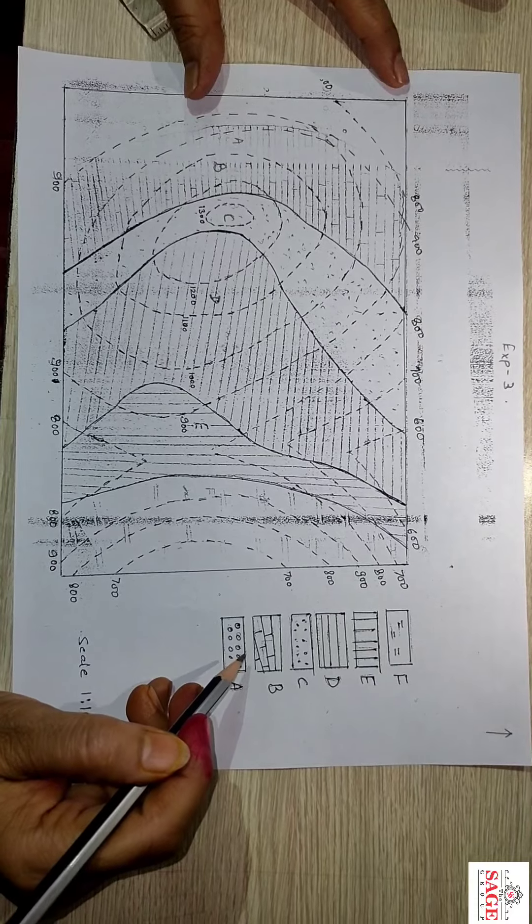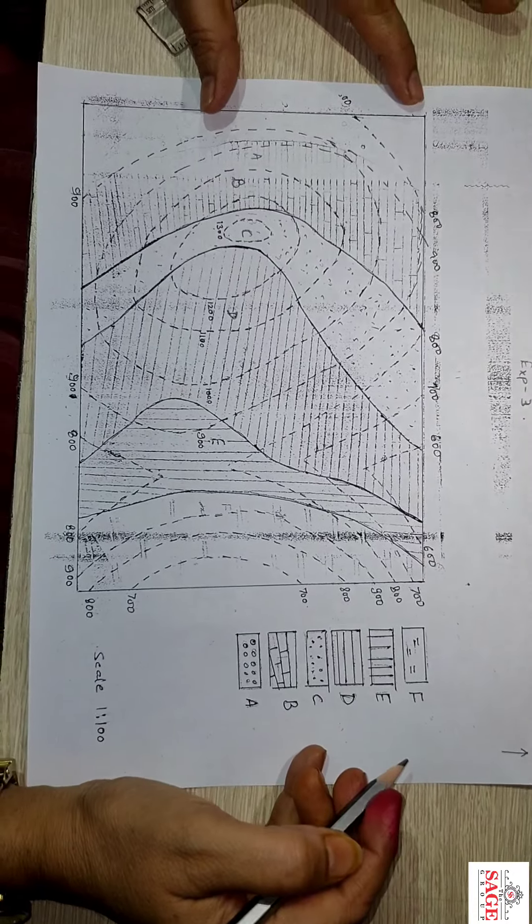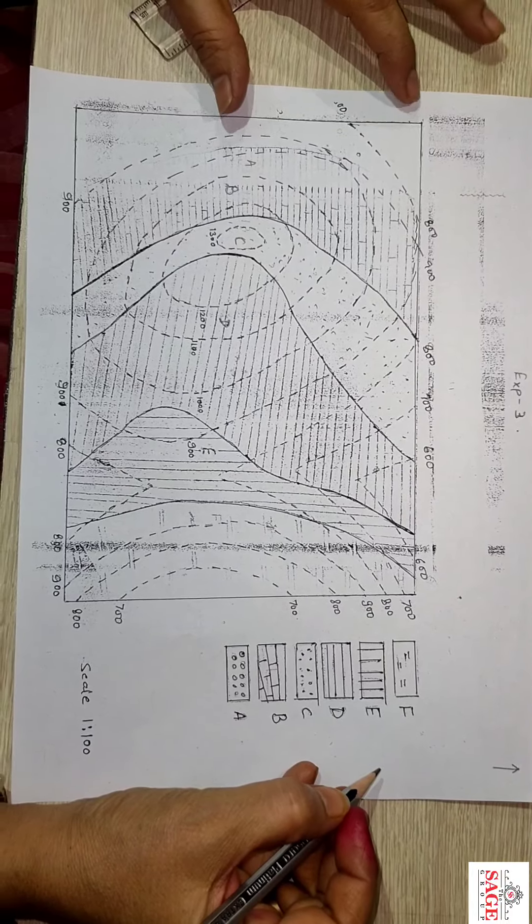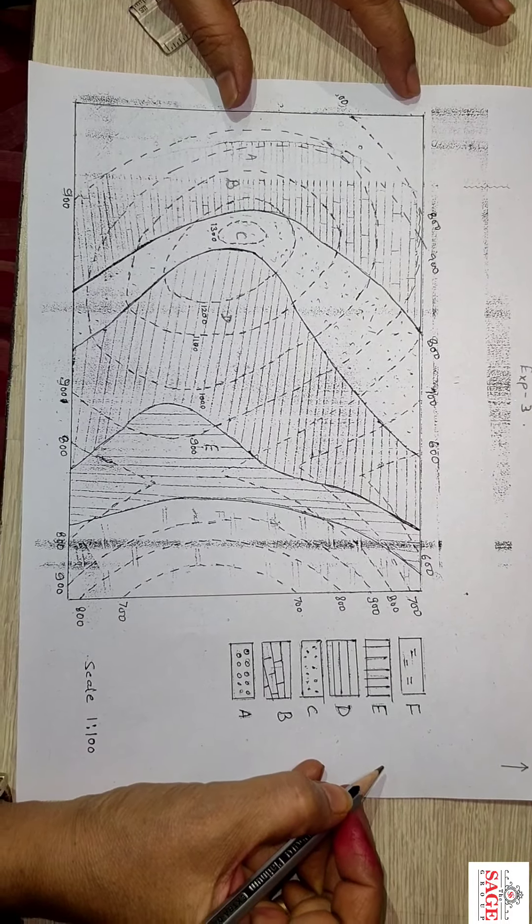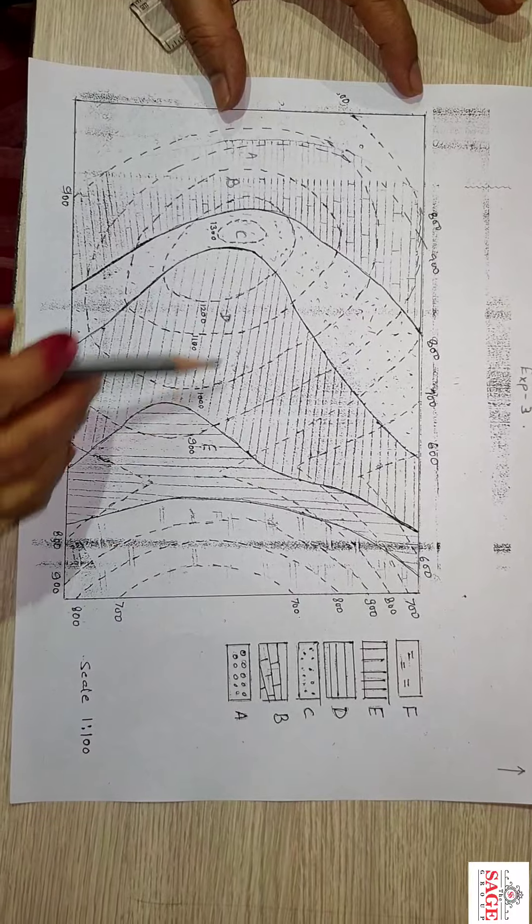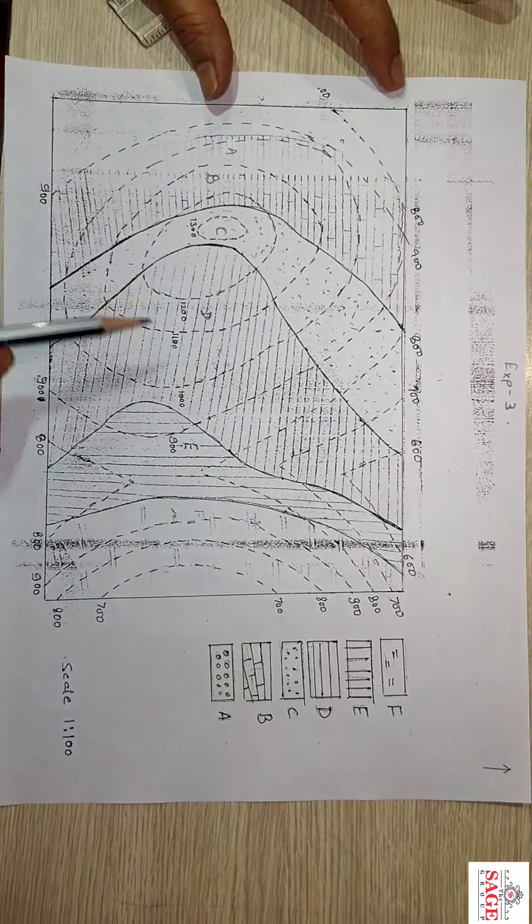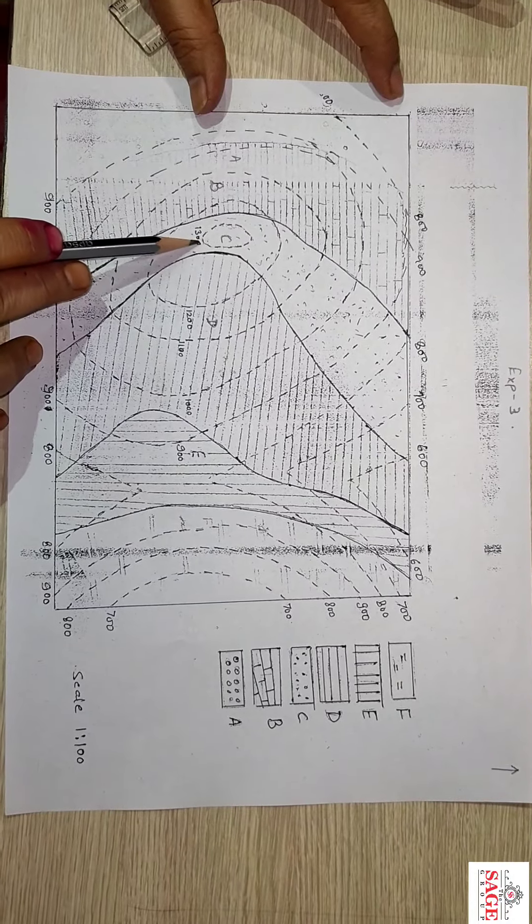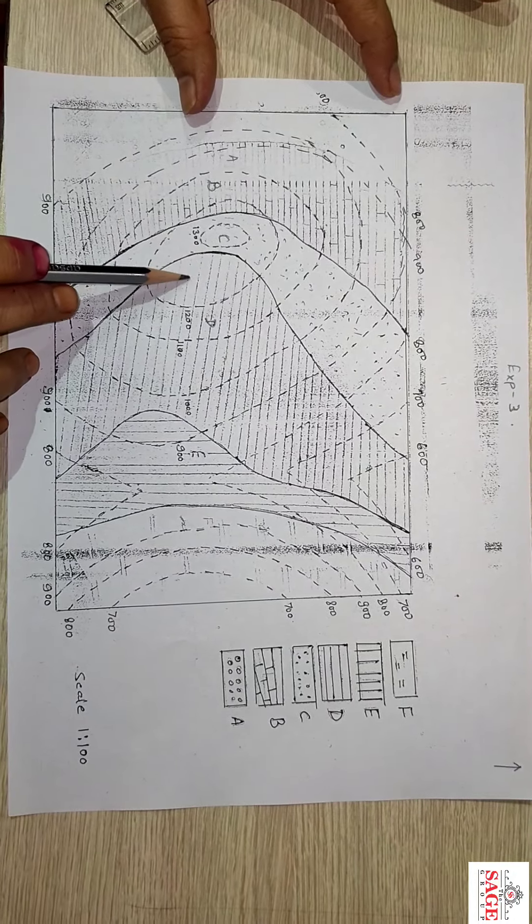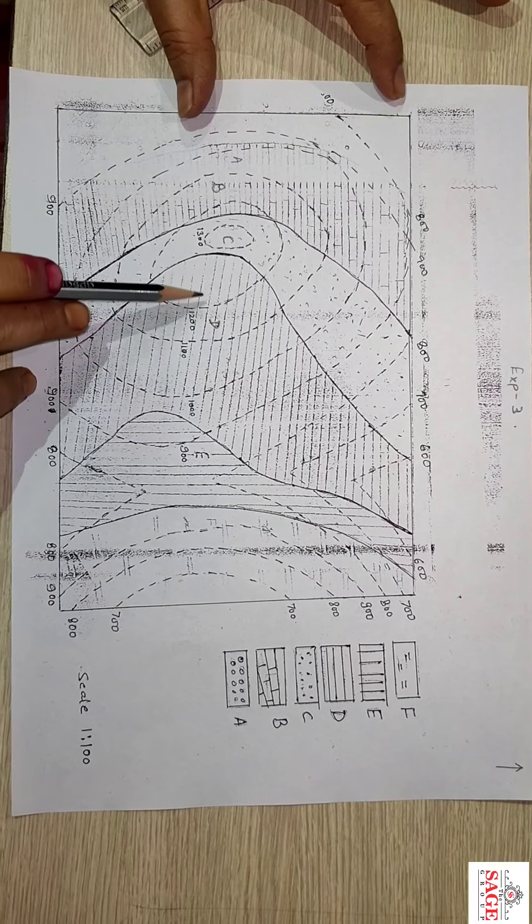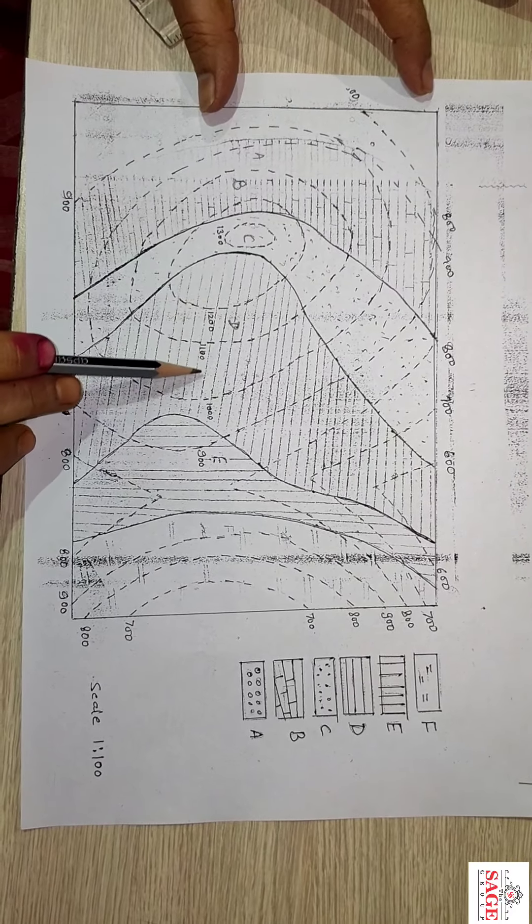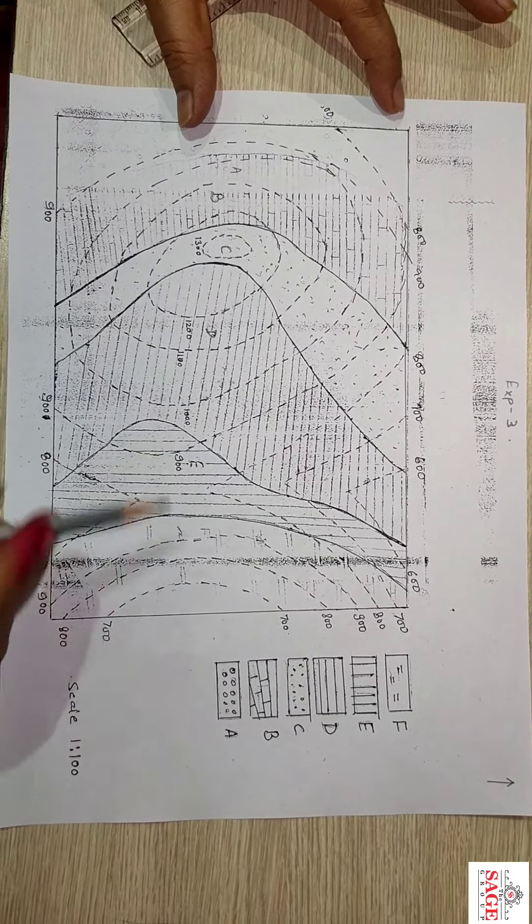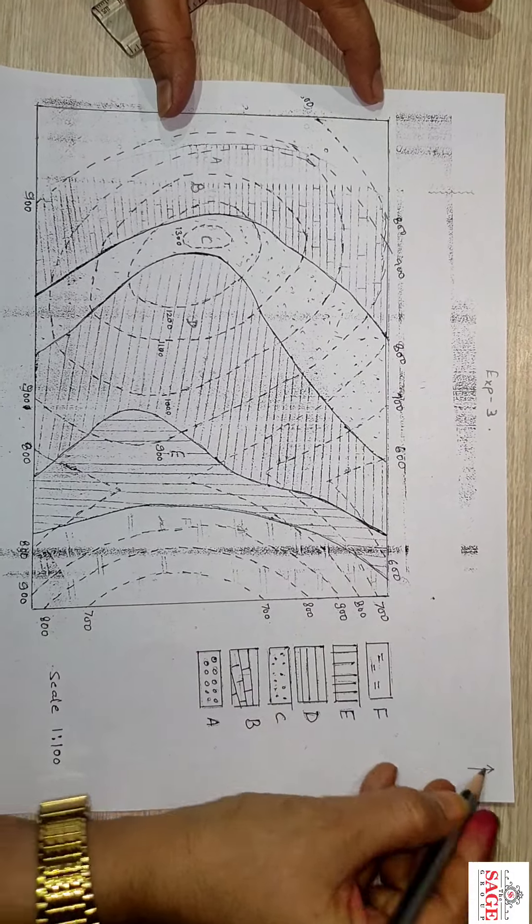As far as our geological map study is concerned, we have to analyze first the orientation of a contour. You can see here in this map the contour of 1300 is present here and gradually the value of contour is going lower side towards the east.